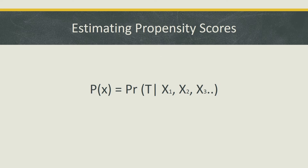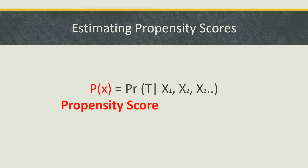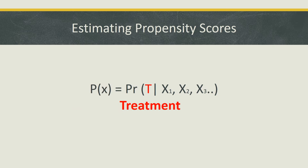Here is the model used to determine the estimated propensity score. It depicts the probability of receiving a treatment given the covariates. The estimated propensity score is the conditional probability of being assigned to a treatment based on a set of characteristics, or covariates. Because we are dealing with probability, this score ranges anywhere from 0 to 1. The t in this model refers to the treatment type. We use t equals 1 for an outcome under treatment or exposure and t equals 0 for an outcome without treatment or exposure.